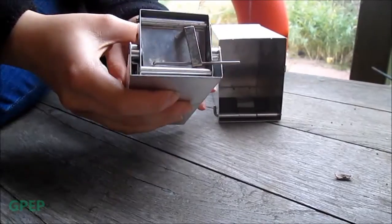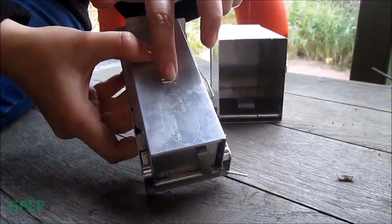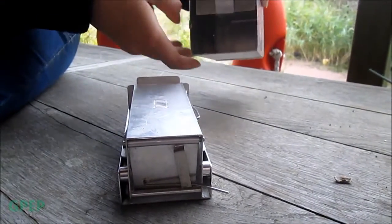So first of all, have your inner tube this way around so that the ridges are at the top and have this part this way around.